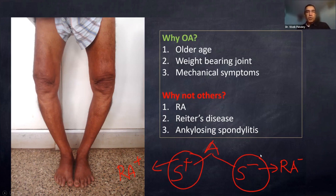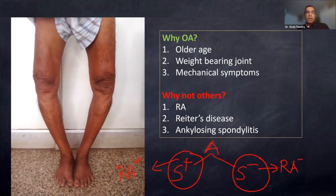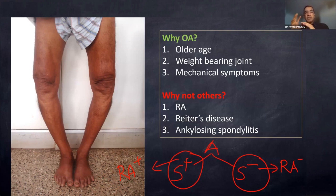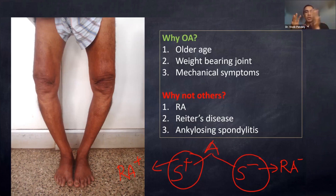Reiter's disease is also a seronegative spondyloarthropathy with a triad of urethritis, arthritis, and conjunctivitis — our patient has no constitutional symptoms, so Reiter's is out. Rheumatoid arthritis classically involves bilateral symmetric small joints of the hand and foot — MCP, PIP, and wrist — not bilateral knee joints. In the Viva, when asked 'why not rheumatoid?', you answer this. There are also other knee features that go against rheumatoid, which we'll cover later.